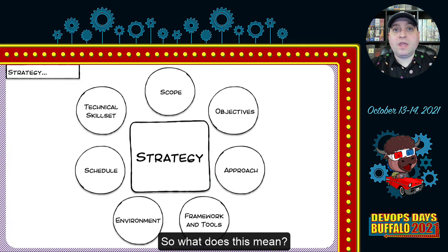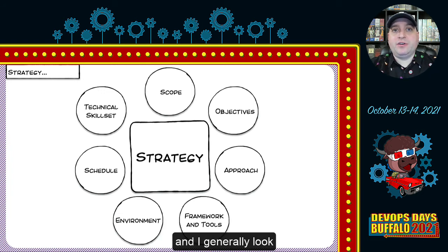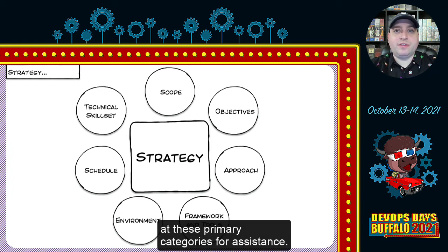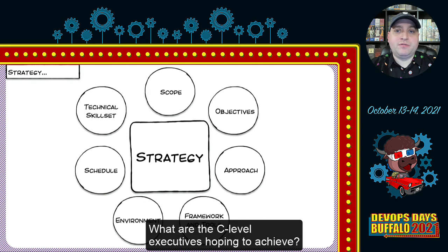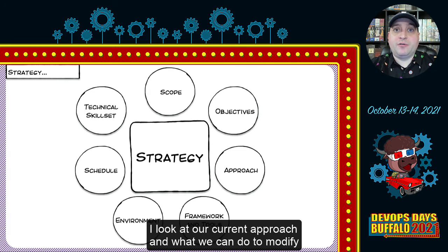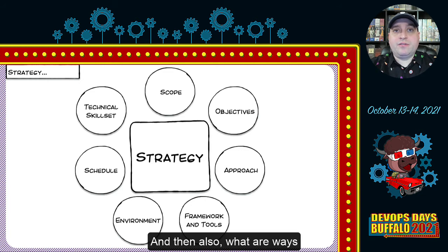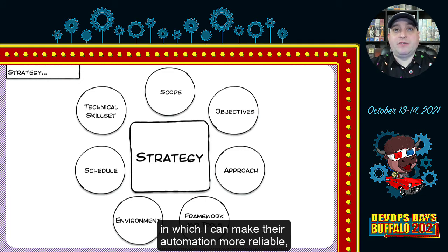We need to take care with our approach to test automation. Having helped numerous organizations, I generally look at these primary categories: What are their overall objectives and what are C-level executives hoping to achieve? What is the technical skill set of the people there? What is the current approach and how can we modify it within the current SDLC? What frameworks and tools can be leveraged? What is the current environment? And how can we make automation more reliable and trustworthy so teams view it as an upfront concern rather than an afterthought?